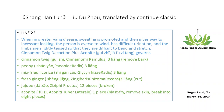Line 22. When in greater yang disease, sweating is promoted and then gives way to incessant leaking. The person is averse to wind, has difficult urination, and the limbs are slightly tense so that they are difficult to bend and stretch.